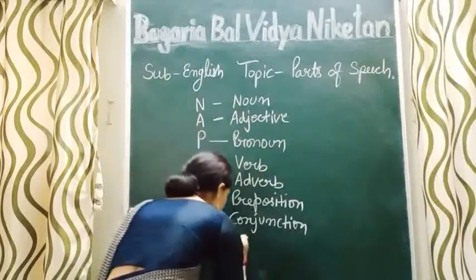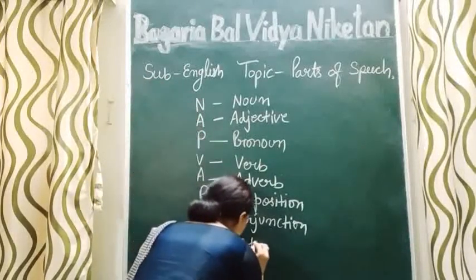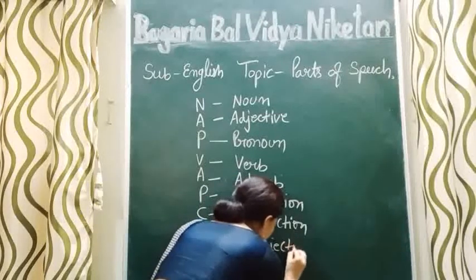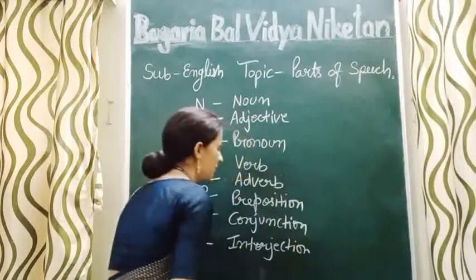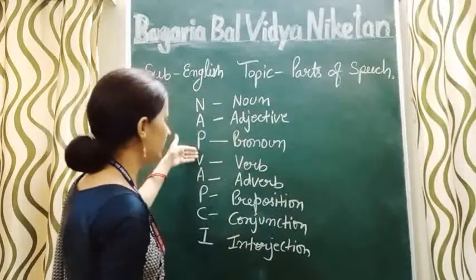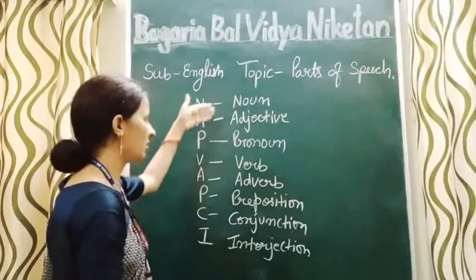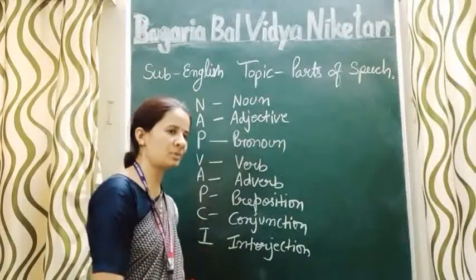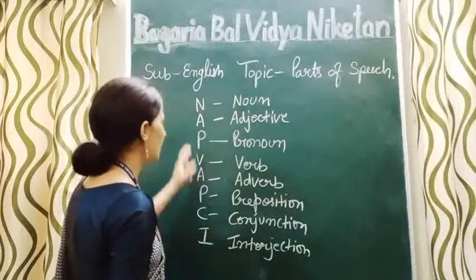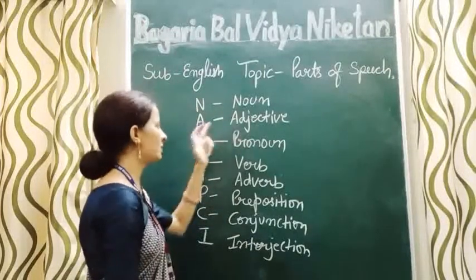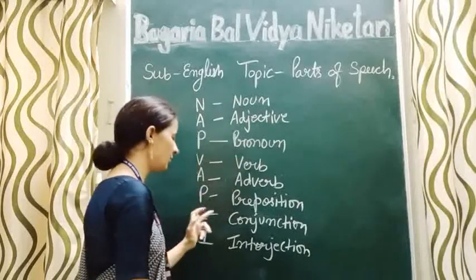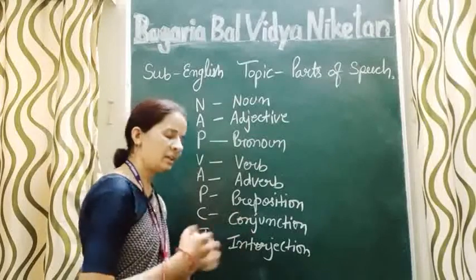I for interjection. So students, after learning that formula, you can learn all the names of parts of speech sequence wise: N for noun, A for adjective, P for pronoun, V for verb, A for adverb, P for preposition, C for conjunction, and I for interjection.